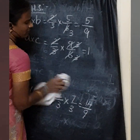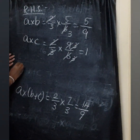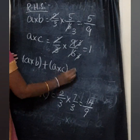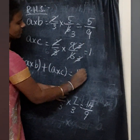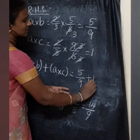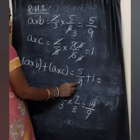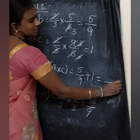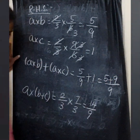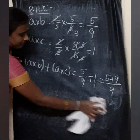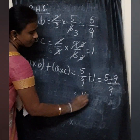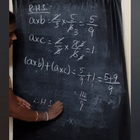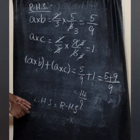Now add A into B plus A into C: 5 by 9 plus 1. The LCM of 9 and 1 is 9, so 5 plus 9 gives 14 by 9. Both the LHS and RHS equal 14 by 9, so it satisfies the distributive law.